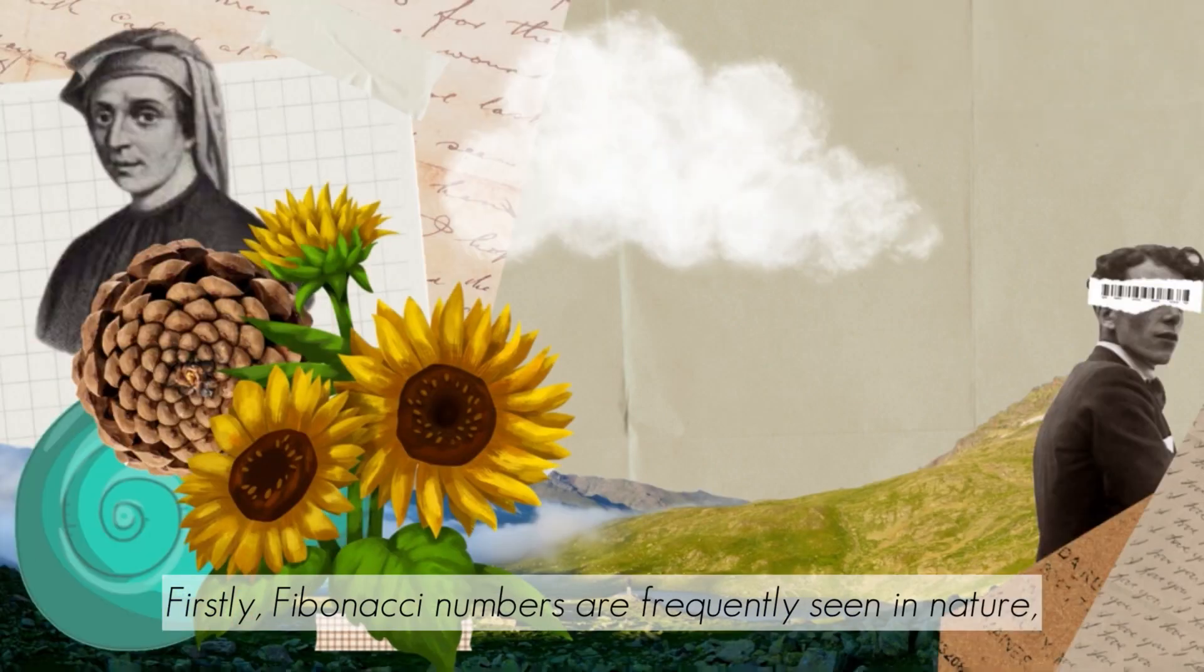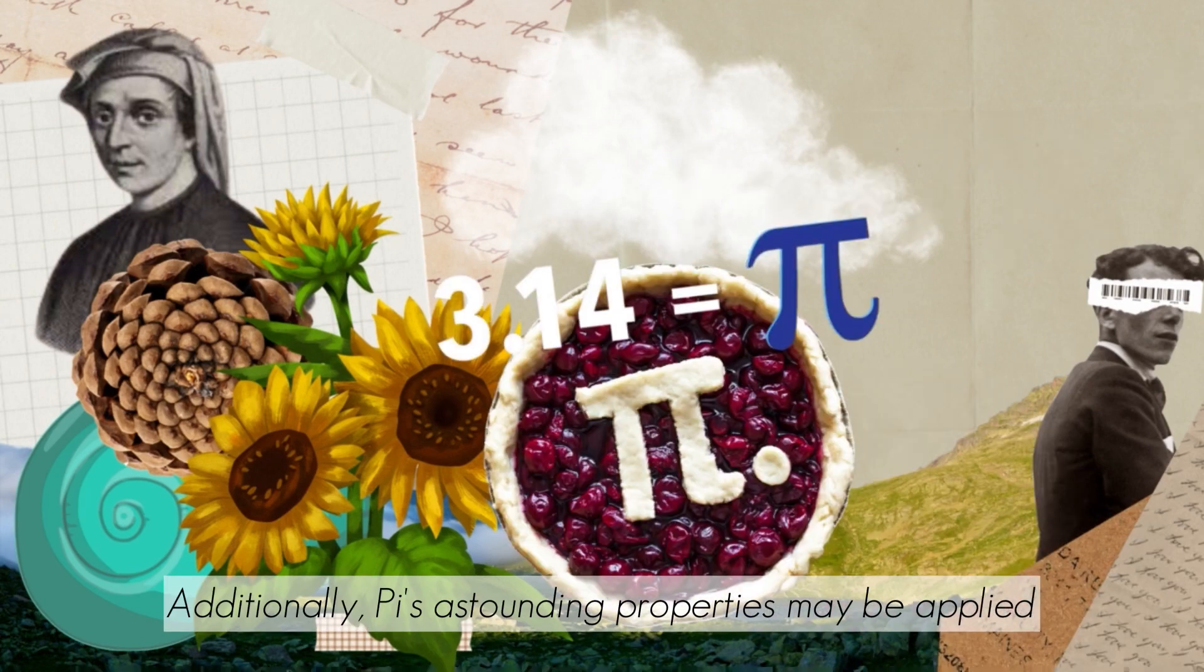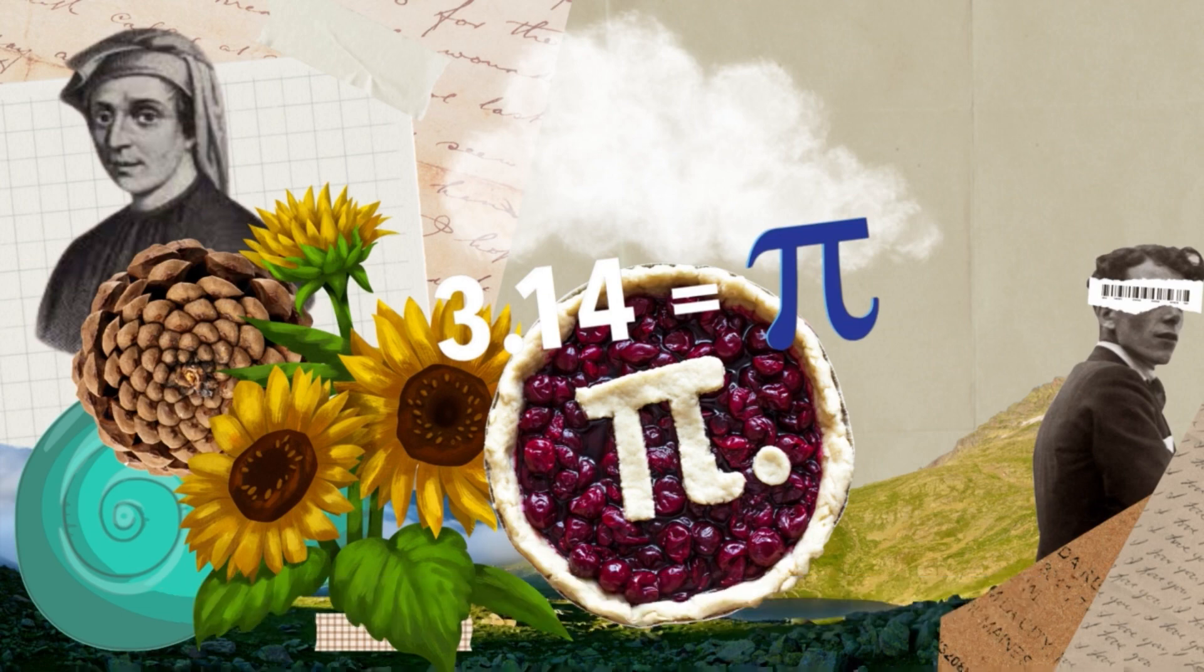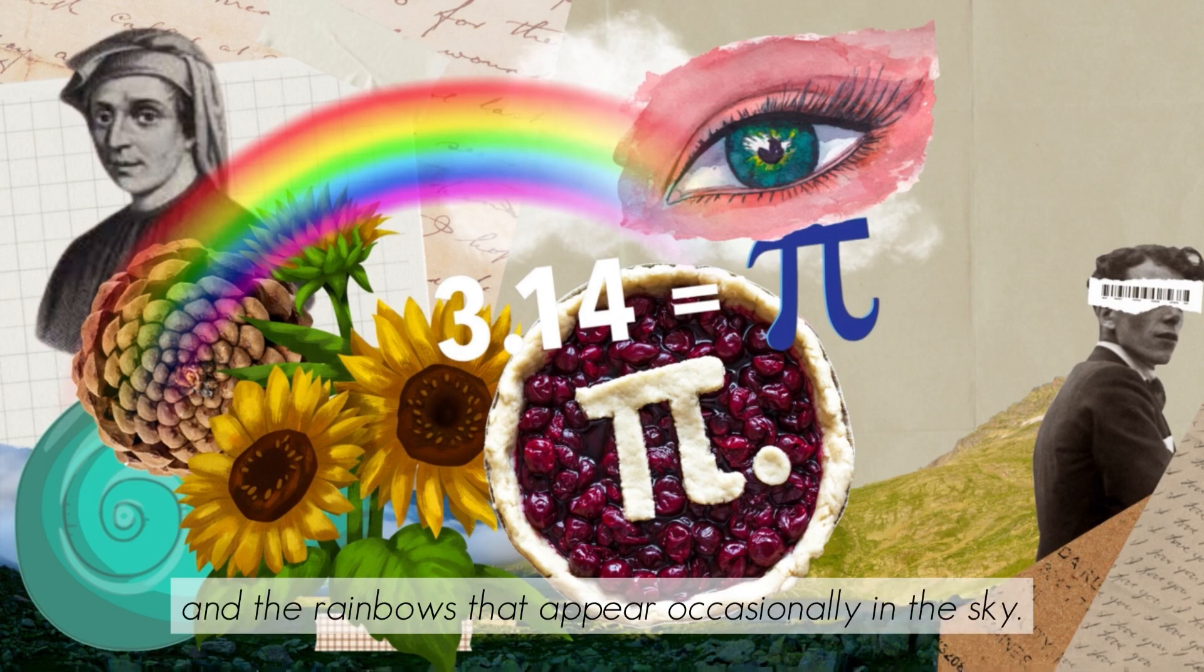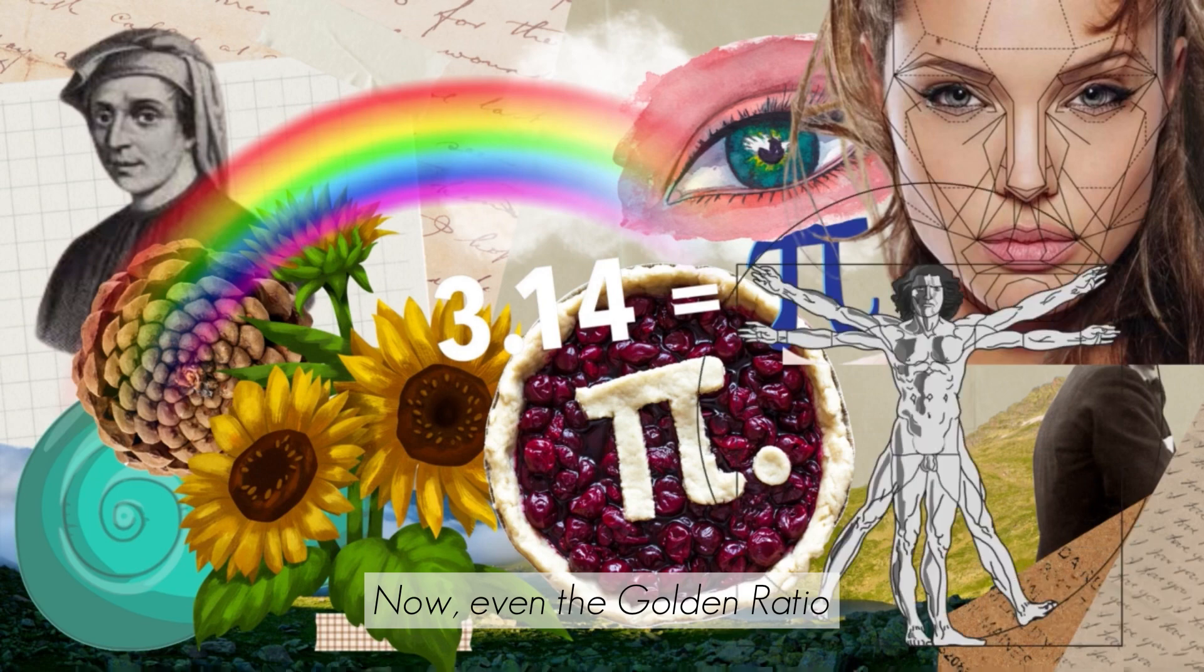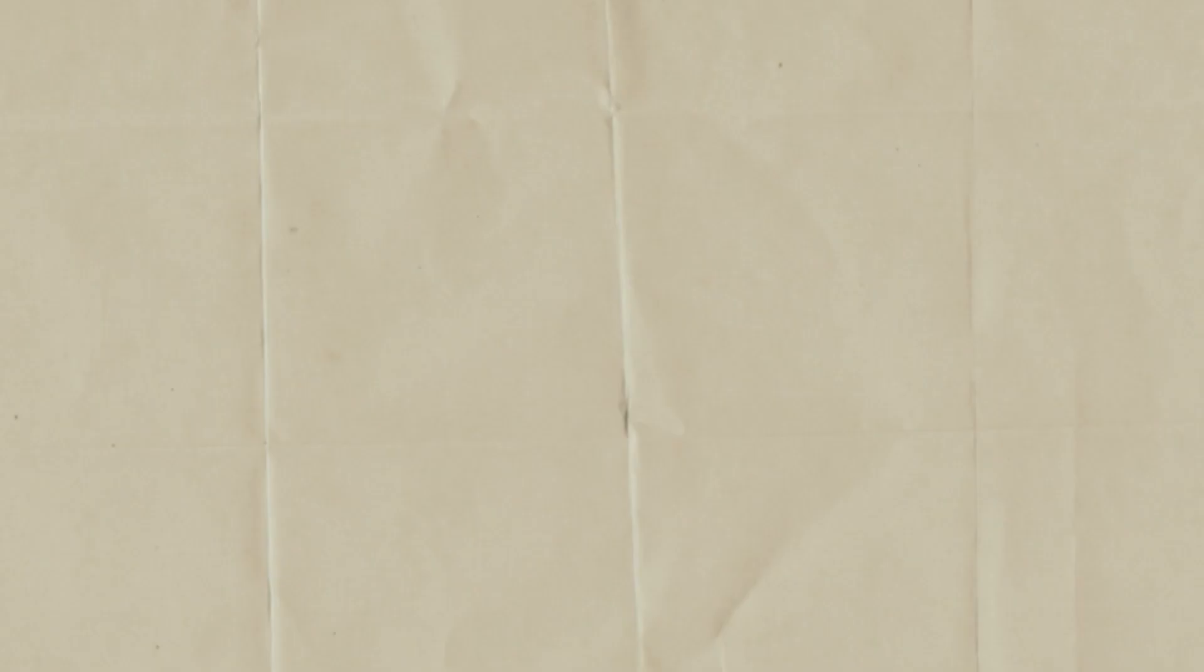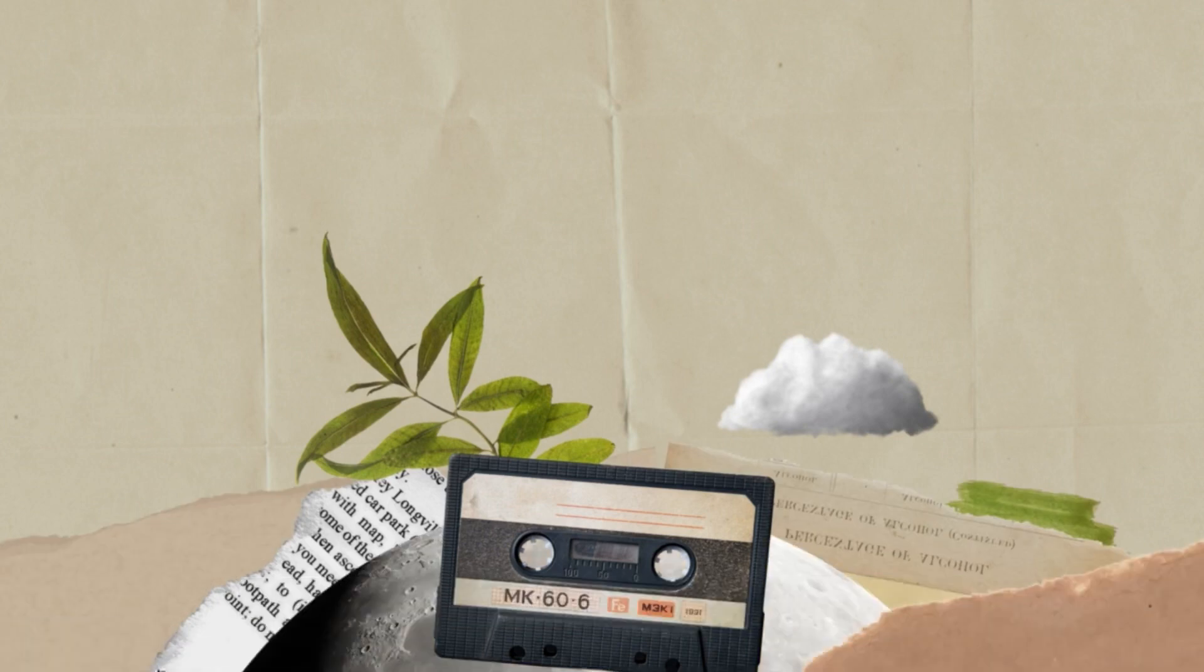Firstly, Fibonacci numbers are frequently seen in nature, particularly in flower petals. Additionally, pi's outstanding properties may be applied to nearly everything in our environment, including the pupil of our eyes and the rainbows that appear occasionally in the sky. Now, even the golden ratio may be used to measure a person's beauty. But first, let us go back to the very beginning.